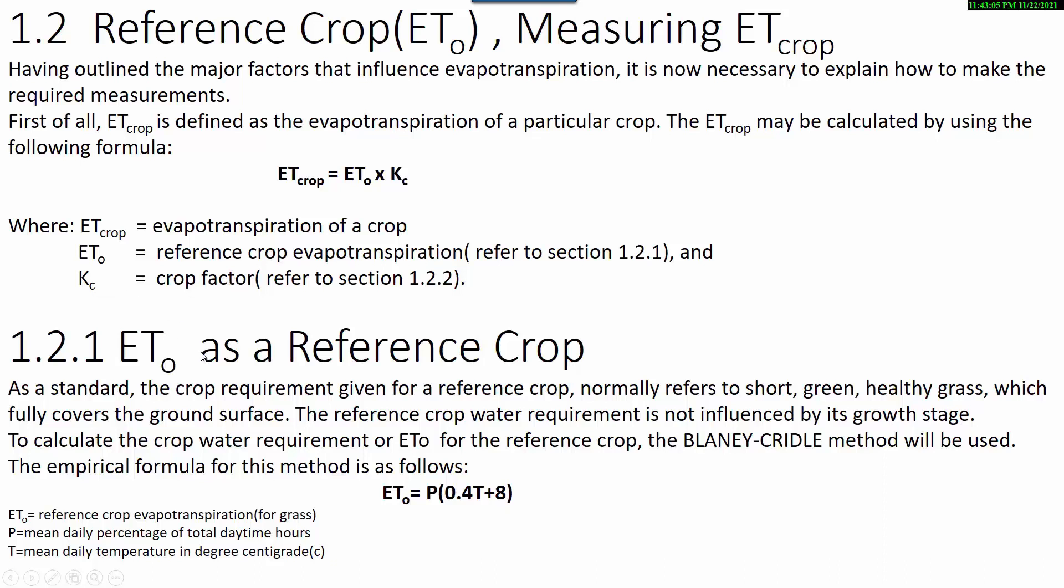ETo is a reference crop. As standard, the crop requirement given for a reference crop normally refers to short green healthy grass which fully covers the ground surface.